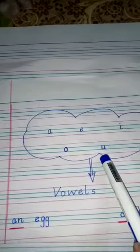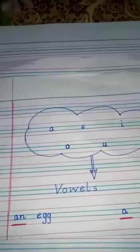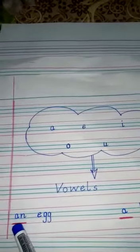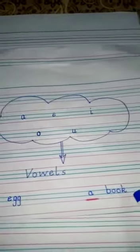These five letters are called vowels. When a word starts with a vowel we use 'an' before it, and if a word starts with other letters we use 'a' before it.